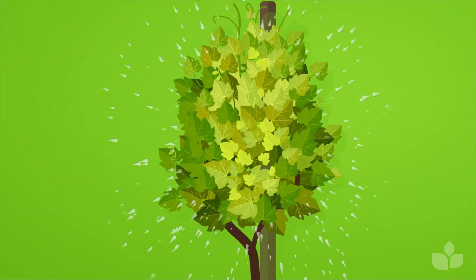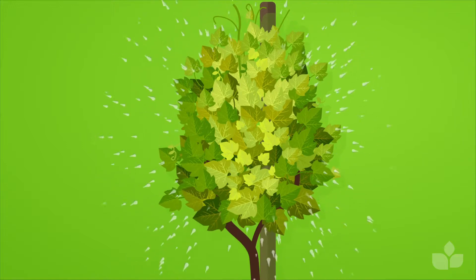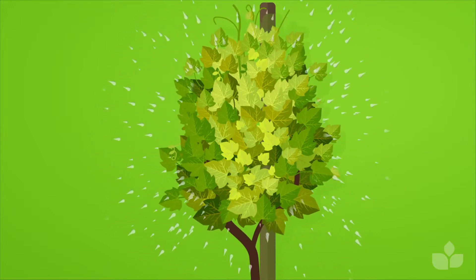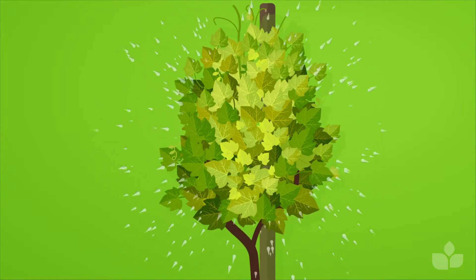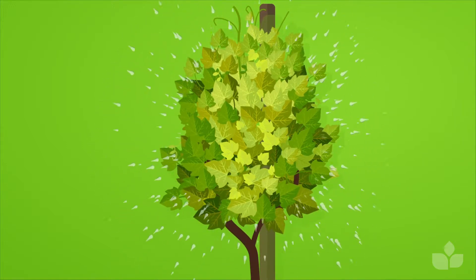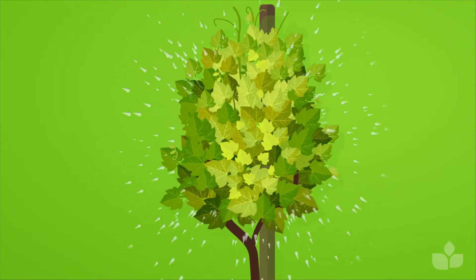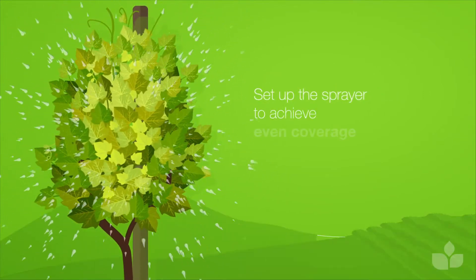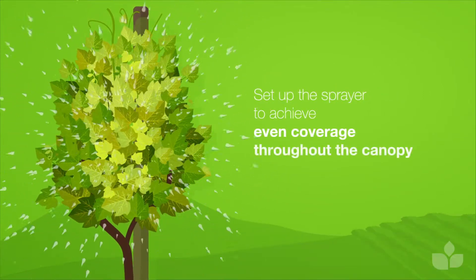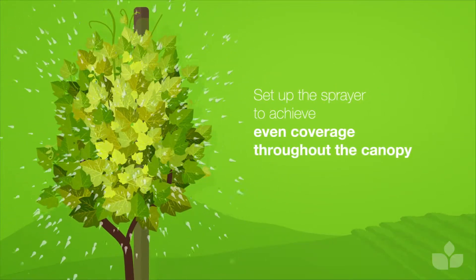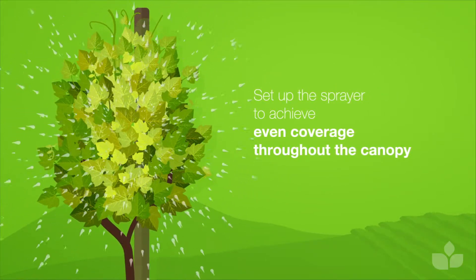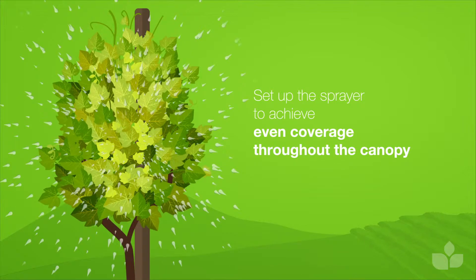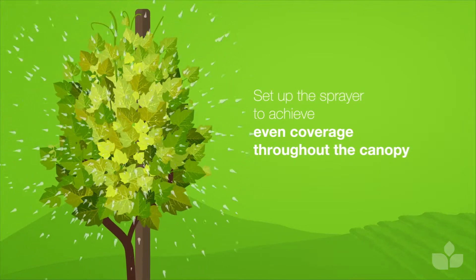Point of runoff can be tricky to identify, as the outer canopy always captures more spray droplets than the inner canopy. This means setting up the sprayer to apply even coverage throughout the canopy is critical.